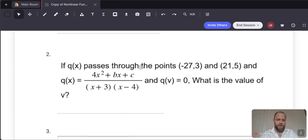So let's go ahead and read out this question and then see how we can solve them in Desmos. So if q(x) passes through the points (-27,3) and (21,5), and q(x) = (4x² + bx + c)/(x+3)(x-4), and q(v) = 0, what is the value of v?